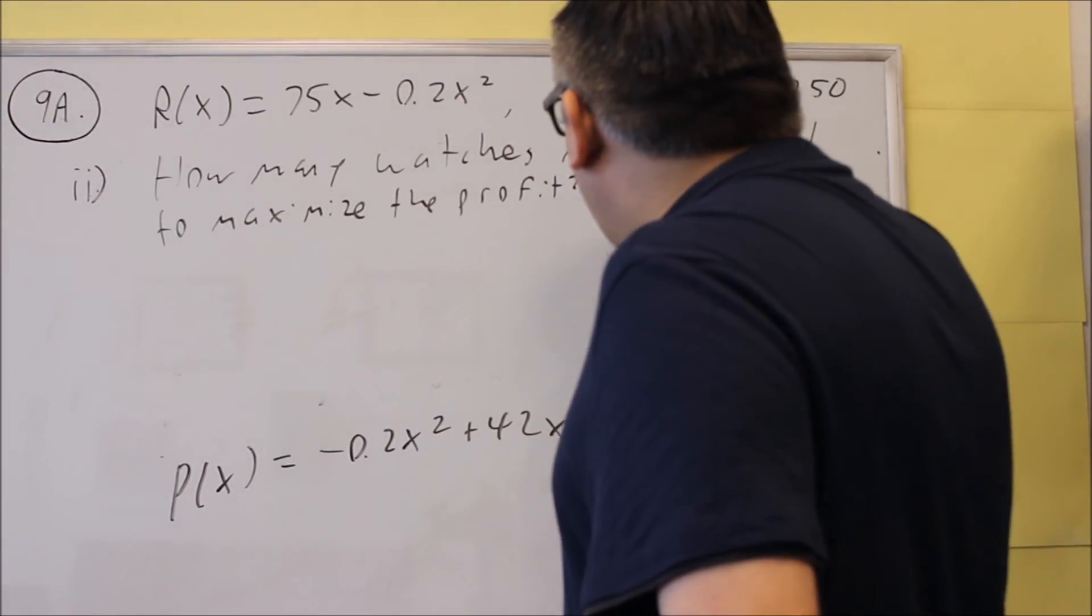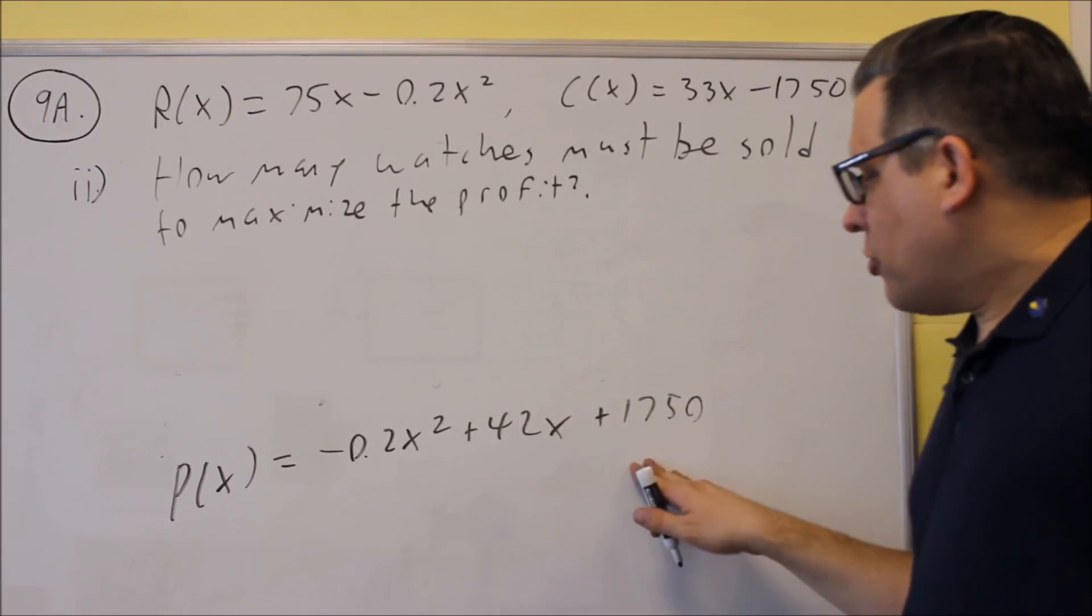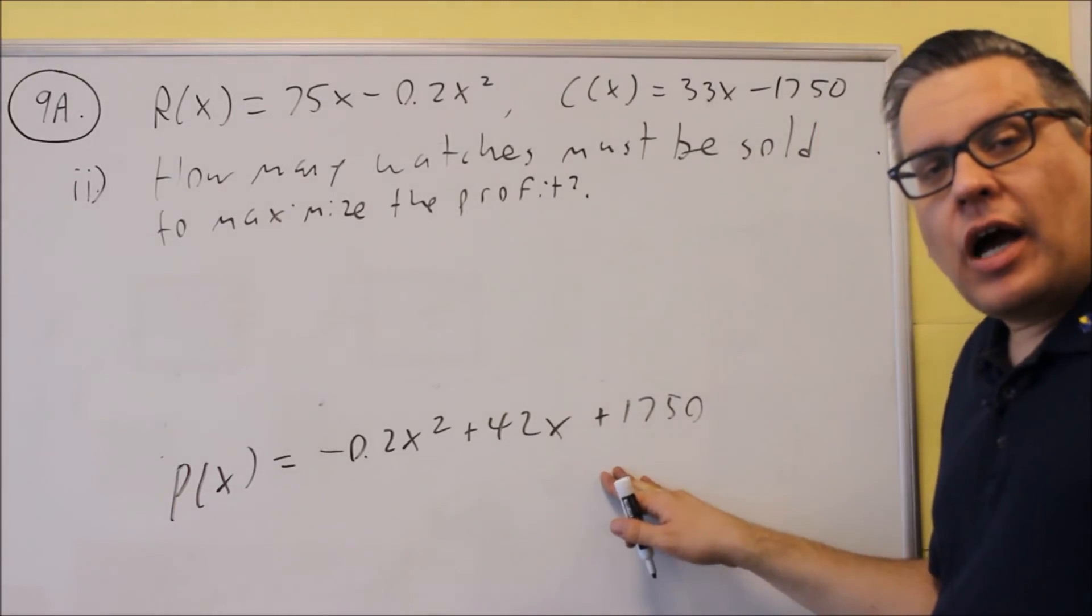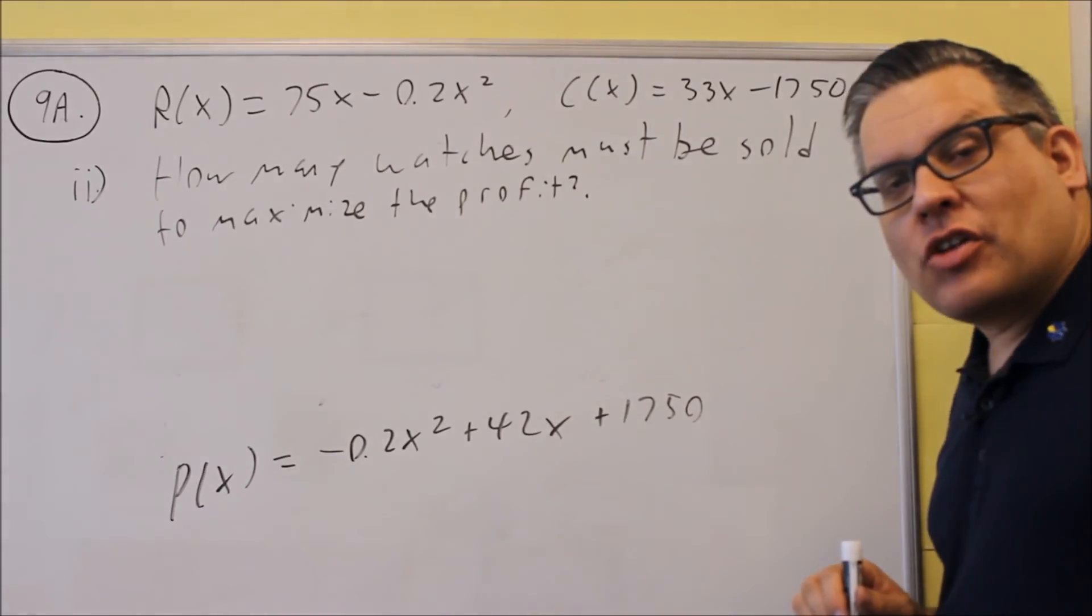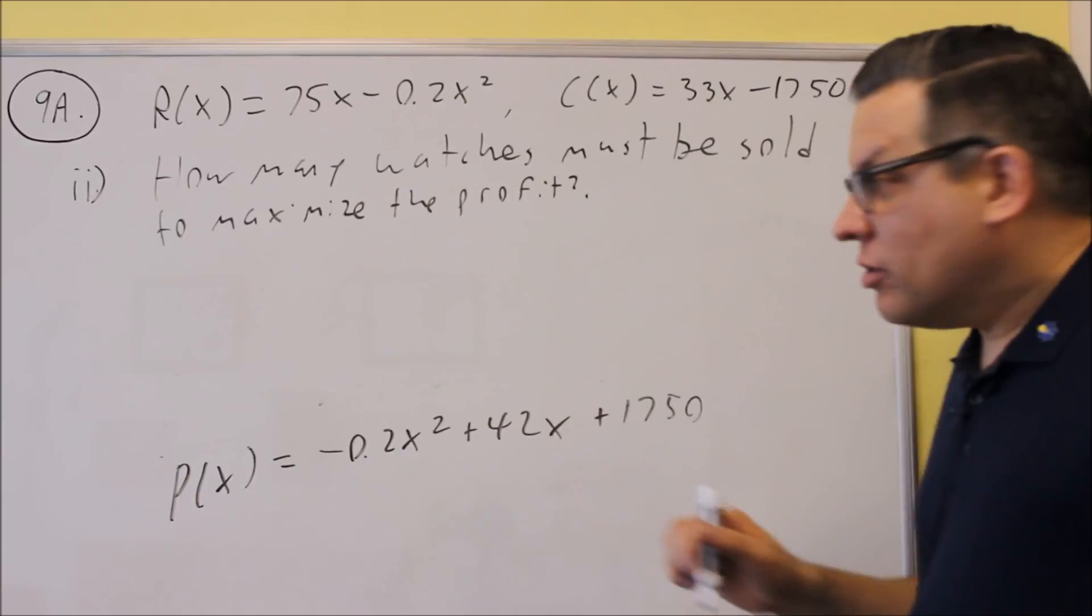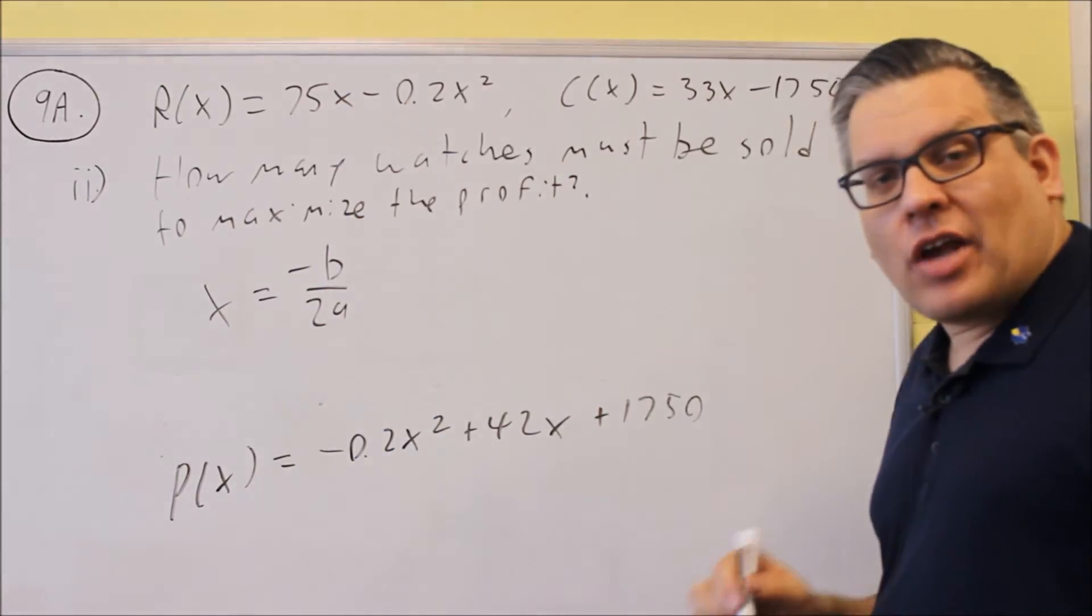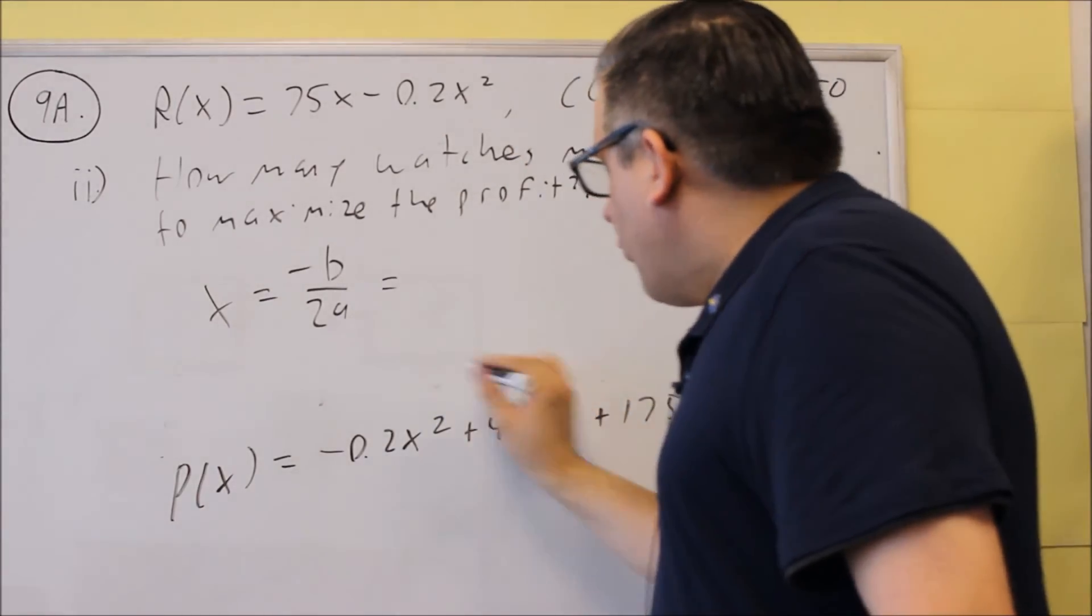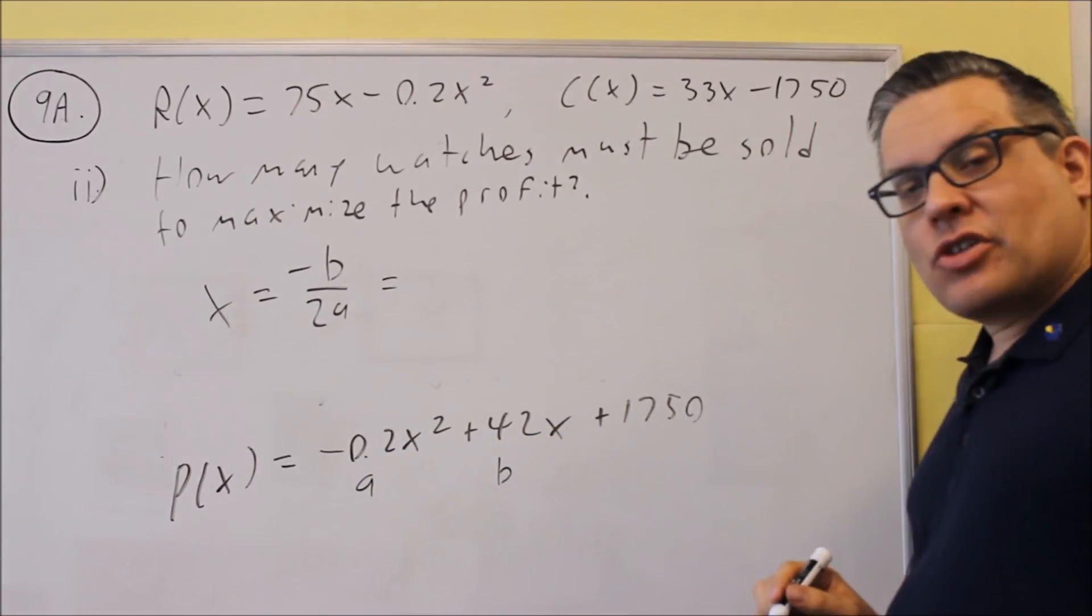The x represents the number of watches sold here, and I have this formula that I did before in part i. Because I have a quadratic formula, I now want to use the negative b over 2a formula—the vertex formula. That's going to give me the value for x. That's all I have to do for part two: just do the vertex formula. From the formula, a is negative 0.2 and b is 42.